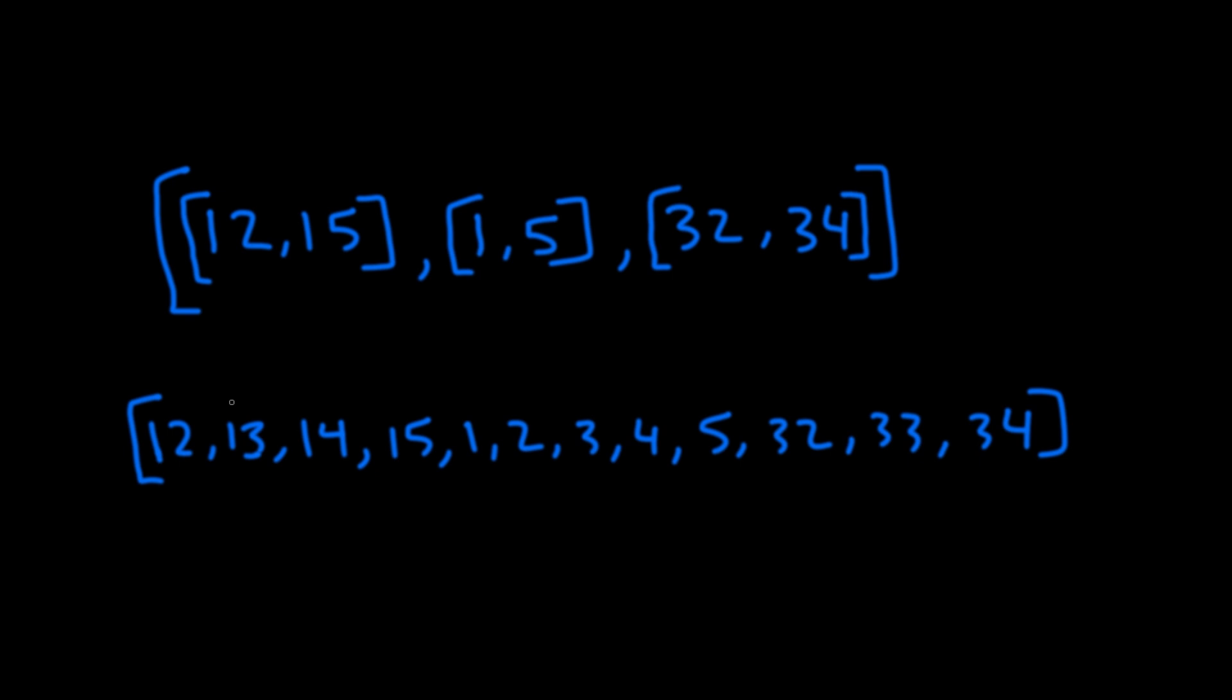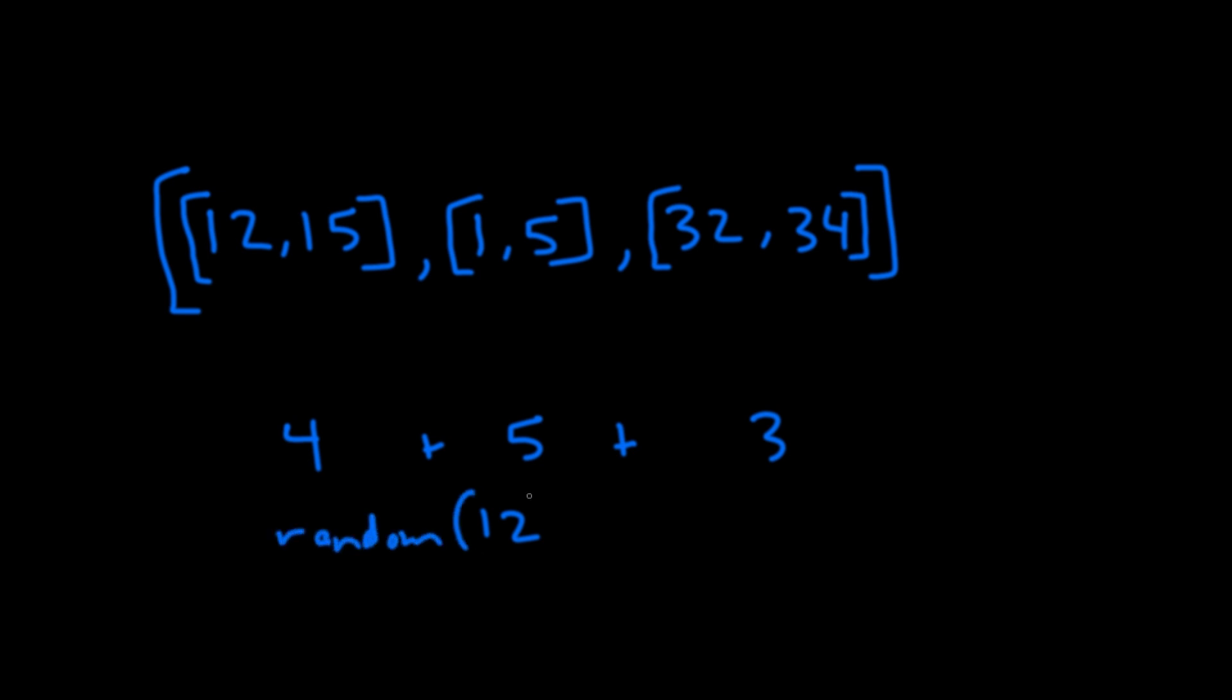Another approach we can do is first check how many numbers we have in each range. In this first range we have 4 numbers, in the second range we have 5 numbers, and in the third range we have 3 numbers. If we add all these up, we get 12 numbers total. What we could do next is pick a random number between 1 and 12, then get that corresponding number in our ranges.